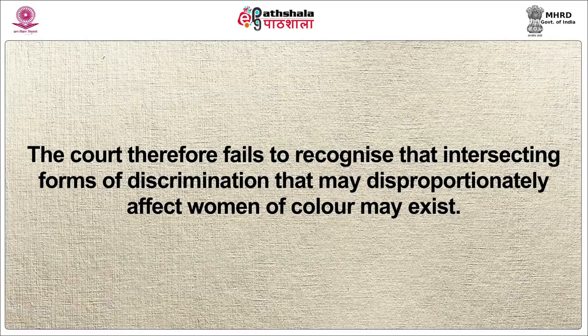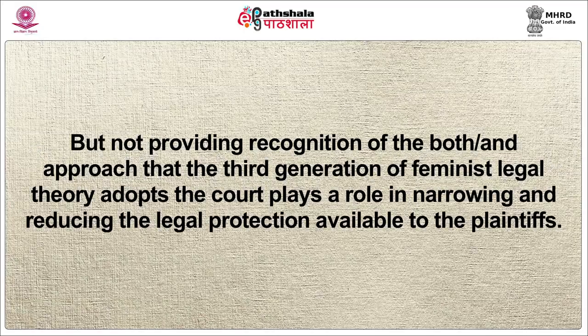The above excerpt from the case demonstrates that the court chose to interpret the intent of the Title VII non-discrimination provisions such that, even if two or more grounds listed as grounds on which discrimination was not allowed existed — for example, race and sex — a super remedy, as the court called it, could not be applied. The court therefore failed to recognize that intersecting forms of discrimination that may disproportionately affect women of color may exist. By not providing recognition of the 'both and' approach that the third generation of feminist legal theory adopts, the court played a role in narrowing and reducing the legal protection available to the plaintiffs.